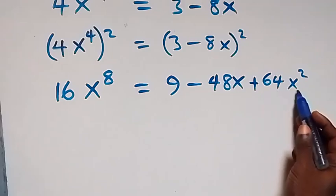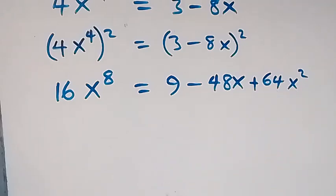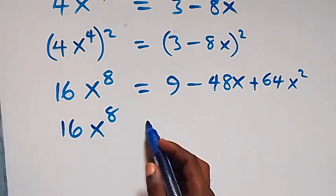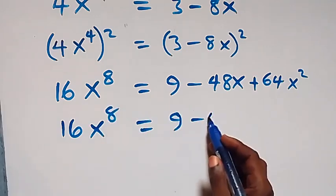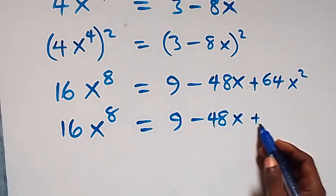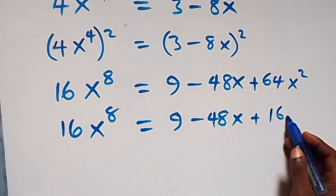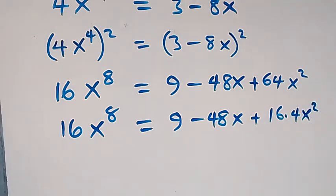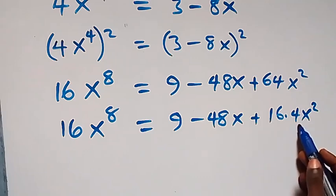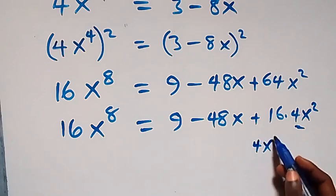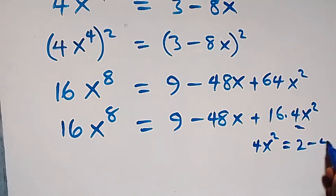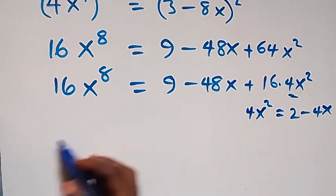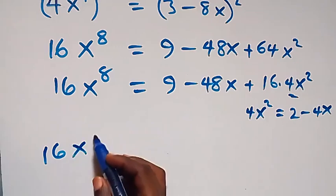So we have 16x⁸ equals 9 minus 48x plus 64x². Now we write 64x² as 16 times 4x². We can recall that 4x² equals 2 minus 4x from our earlier equation, so we substitute that in.